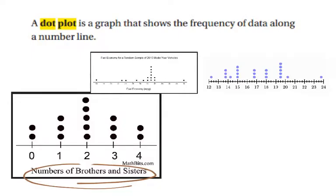So the actual number of siblings, those are the numbers that are written across the bottom of this particular graph. Let's look at another one.